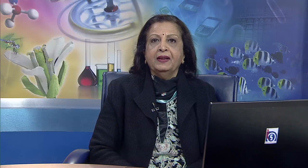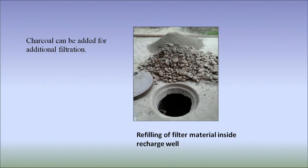Filter — from the rooftop, through the pipes, water is collected and taken to a storage tank and then sent to the filter unit. The filter is used to remove suspended pollutants from rainwater collected over roof. A filter unit is a chamber filled with filtering media such as fibre, coarse sand and gravel layers to remove added dirt from water before it enters the storage tank or recharge structure. Here you can see refilling of filter material inside a recharge well. Charcoal can also be added for additional filtration, as charcoal removes pollutants.